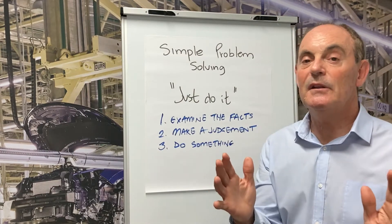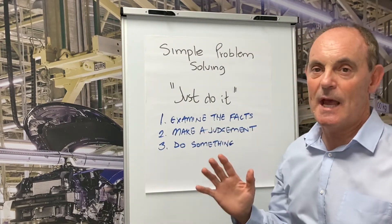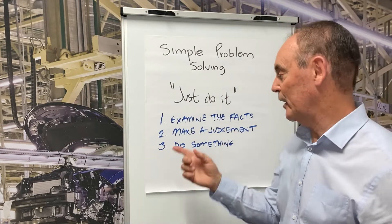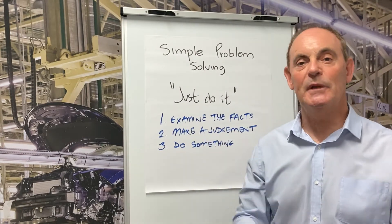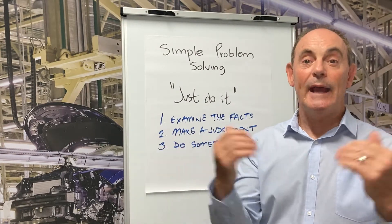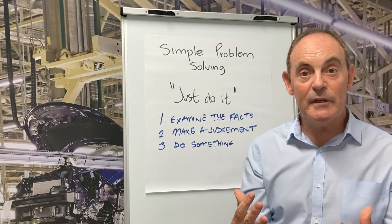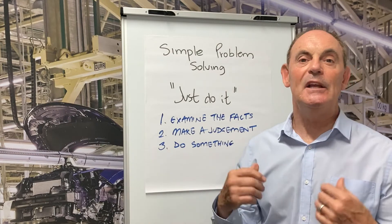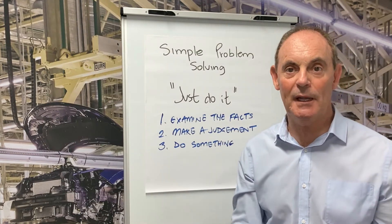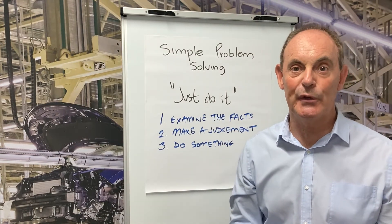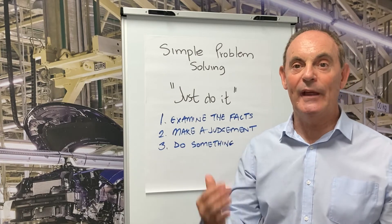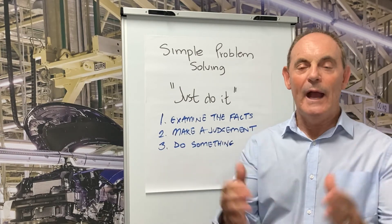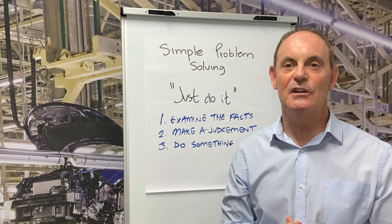Just to recap the three points: the first one is examine the facts — stay cool, don't let emotion control the situation. The second one is make a judgment — collaborate as a team, gather the unbiased data, determine the theory, and work out what's going to solve the problem. The third one is do something — carefully put into place those actions that you've agreed as a team and monitor their outcome as you go. I hope this has been very helpful and thank you for joining me on this edition of Lean Bites.